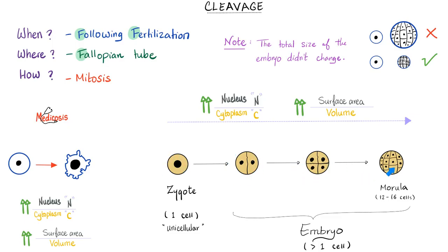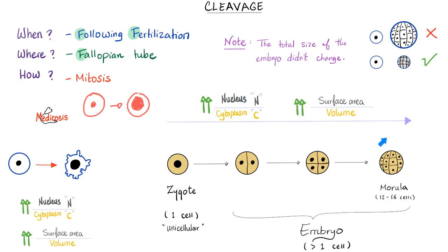However, two things did change: the nucleus-to-cytoplasmic ratio and the surface area-to-volume ratio. Here is your cell with a lovely nucleus. Increased nucleus-to-cytoplasmic ratio means the nucleus has increased relative to the surrounding cytoplasm. This makes perfect sense when you realize that the size of the embryo did not change, but instead of one nucleus, now we have about 16 nuclei. And since these cells are getting more and more active, even within a single cell the nucleus-to-cytoplasmic ratio is getting bigger — so this can happen both intracellularly and intercellularly.